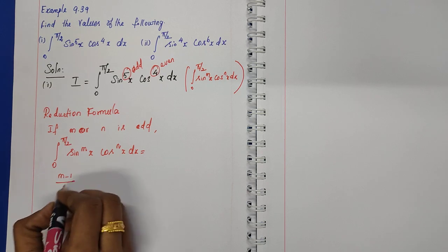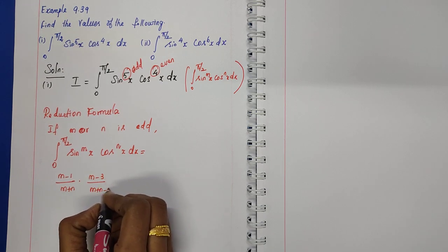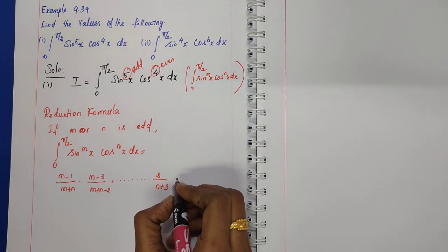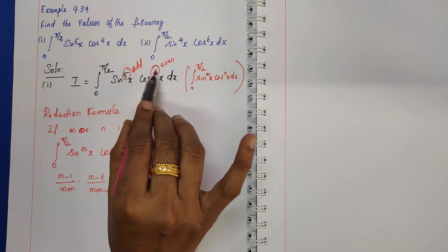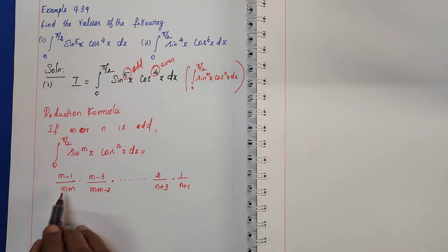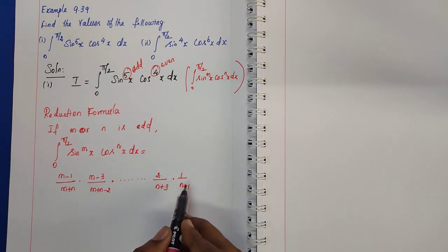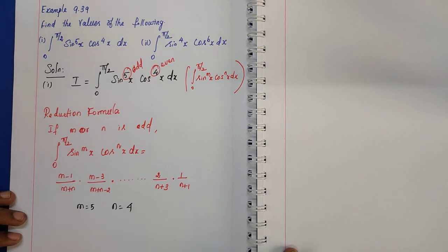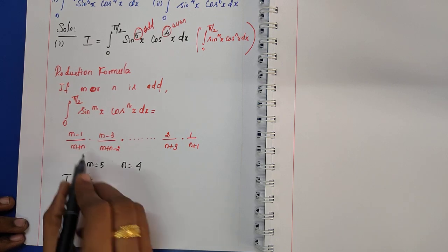The reduction formula is: (m−1)/(m+n) × (m−3)/(m+n−2) × ... × 1/(n+1). With m=5 and n=4, substituting: I = (5−1)/(5+4) × (5−3)/(5+4−2) × 1/(n+1). So that is 4/9 × 2/7 × 1/5.